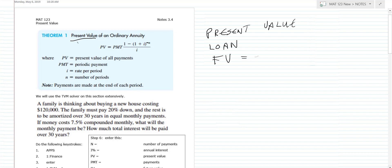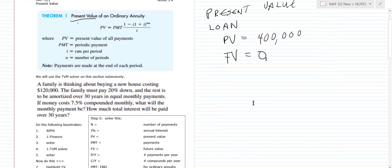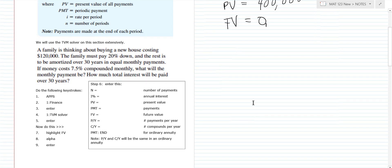Basically what happens is you start with a future value — let's say you're buying a $400,000 house, that's how much is being loaned to you, that's the present value. With a savings annuity you start at zero and save up, but now it's backwards: the present value starts big (that's the loan amount) and hopefully one day you pay off your house and the future value goes to zero. We're going to do everything on the TVM in this section.